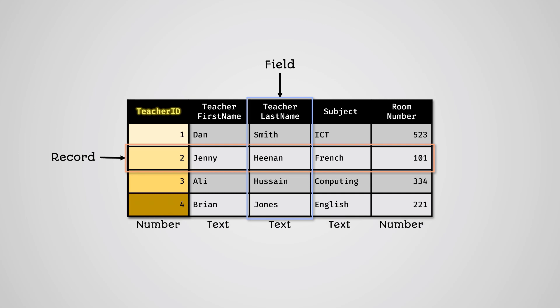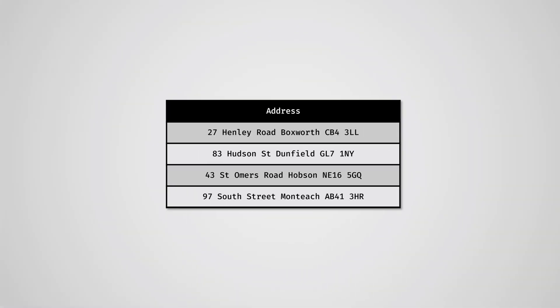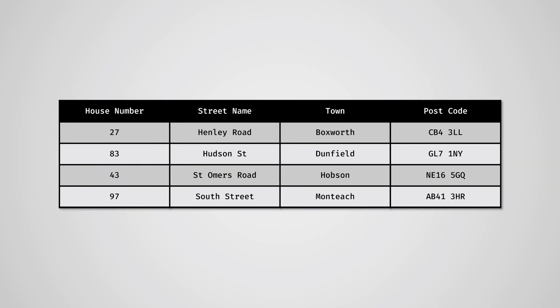Each property must have a data type that defines the kind of data that can be stored in that column. The data stored in each column cannot be broken down any further. For example, if you had a column called address, this could be broken down further into house number, street name, town, and postcode.